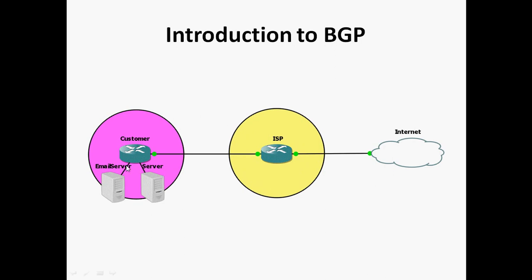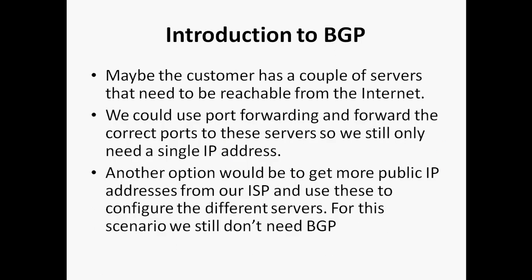For this scenario, still we don't need BGP. Either we can reach this server through the internet using port forwarding with a single public IP, or we can request more public IP addresses from the ISP and configure them on the servers. The customer just creates one default route pointing towards the ISP — that is enough. In this scenario also, we don't need BGP.